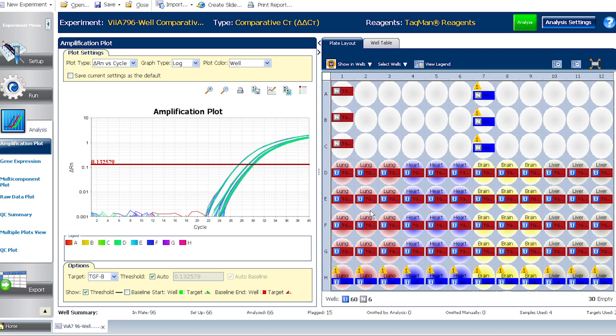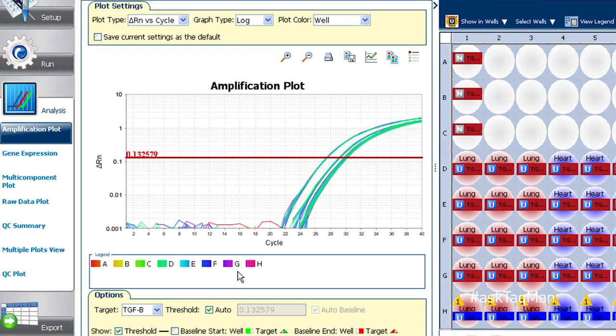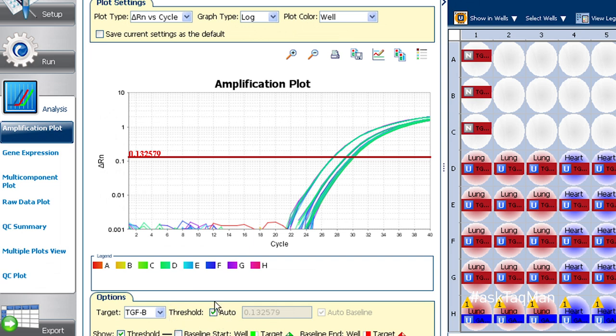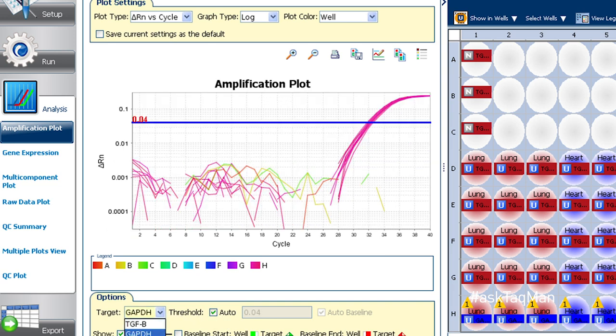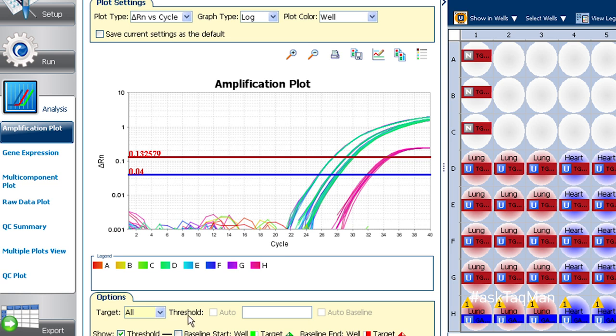The default on all Applied Biosystems real-time PCR software is auto-threshold, meaning the software sets thresholds for us the second we click analyze. Notice that it sets a different threshold for each assay separately, which is good since not all assays have the same sweet spot.